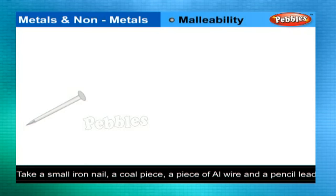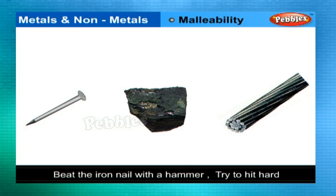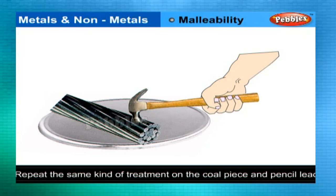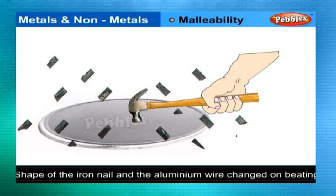Malleability: Take a small iron nail, a coal piece, a piece of thick aluminium wire, and a pencil lead. Beat the iron nail with a hammer — try to hit hard. Hit the aluminium wire hard also. Then repeat the same treatment on the coal piece and pencil lead. The shape of the iron nail and the aluminium wire changed on beating. If beaten harder, these could be changed into sheets.